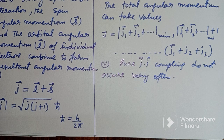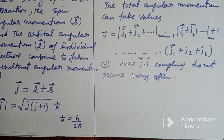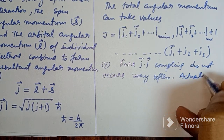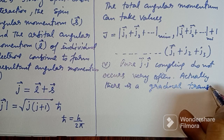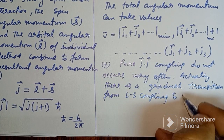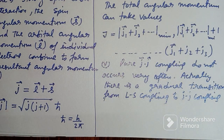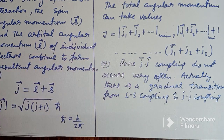LS coupling usually occurs in elements with the lowest atomic number. For heavier atoms with higher atomic number, they follow JJ coupling, but pure JJ coupling rarely occurs. There is actually a gradual transition from LS coupling to JJ coupling — there is no sharp boundary between them.